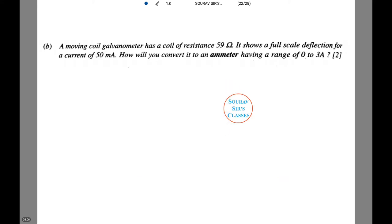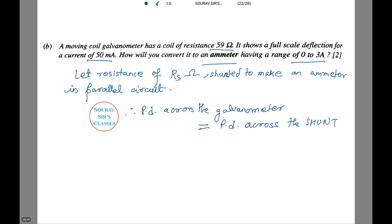This is a very important question. A moving coil galvanometer has a coil of resistance 59Ω. It shows a full scale deflection for a current of 50 mA. How will we convert it to an ammeter having a range of 0 to 3 amperes? Let's see what needs to be done.